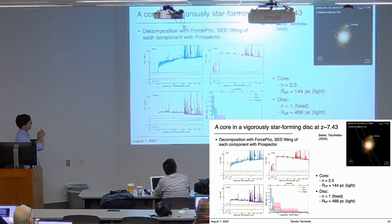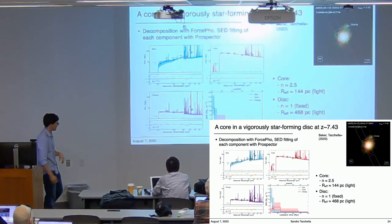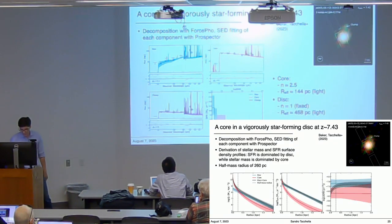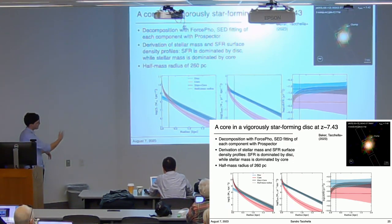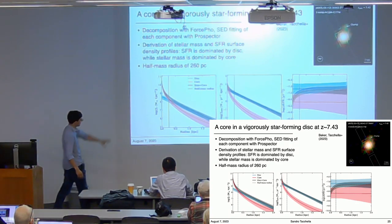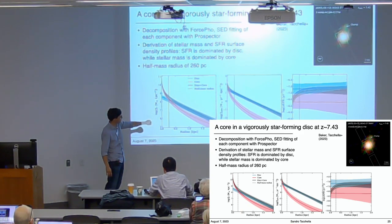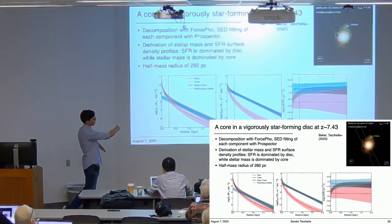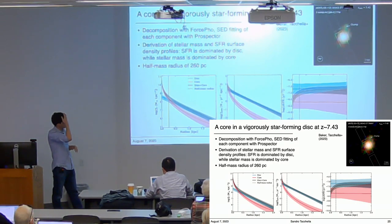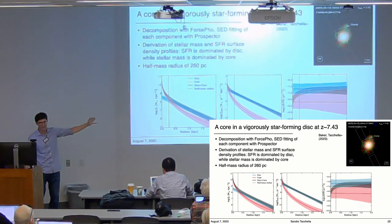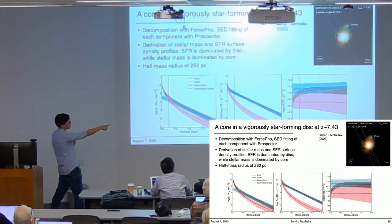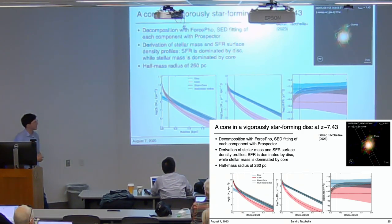Using ForcePho and Prospector to get the SED and stellar populations for each component, the core is slightly older while the disk's star formation history rises toward recent times. Converting to stellar mass, star formation rate, and specific star formation rate profiles as a function of radius: stellar mass surface density is dominated by the core in the inner region and by the disk in the outer region. The specific star formation rate profile rises as a function of radius, with the half-mass radius at 260 parsecs—implying the outer regions have mass-doubling timescales of just a few tens of millions of years.